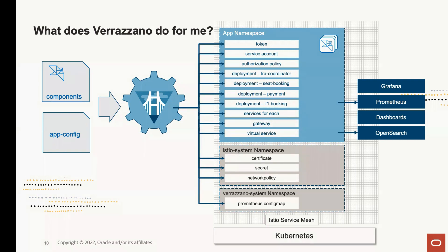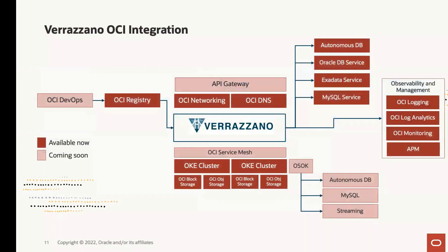Correct me if I'm wrong, but what I see is that Verrazzano is using very standardized Kubernetes artifacts. We're using the Kubernetes API for interaction and typical Kubernetes artifacts like tokens, service accounts, and authorization policies. This is probably why it is very Kubernetes vendor agnostic. But do we provide any special treatment for OCI or any special interaction with OCI services?